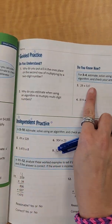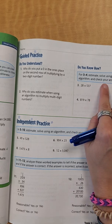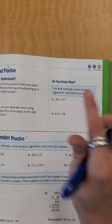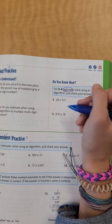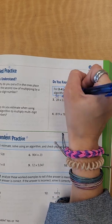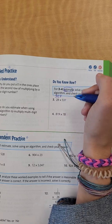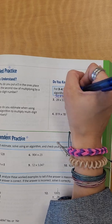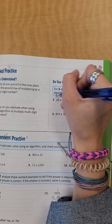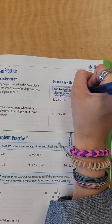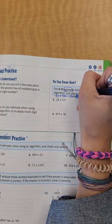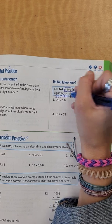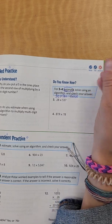So we're going to estimate, solve using an algorithm, and check your answer. So let's estimate first. With this one, I have 28, I know that's going to round to 30, times 537, I know that's going to round to 500. So I know that 3 times 5 is 15, and then I add 1, 2, 3 zeros. So I know my answer is going to be close to 15,000.